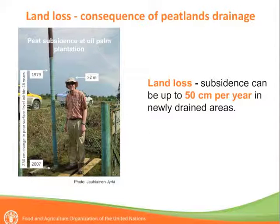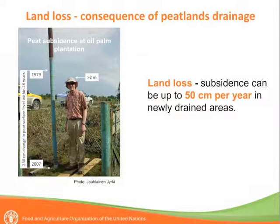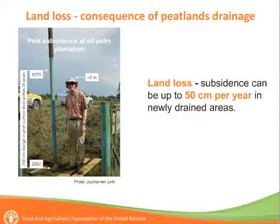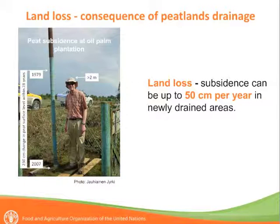Here you can see a consequence of land loss — land subsidence in Southeast Asia — where over 28 years there was a decrease in the land surface of 230 centimeters. At the beginning of plantation establishment there is a very high rate of land subsidence of up to 50 centimeters per year in newly drained areas. Over time it decreases, but continues until the peat is completely degraded.